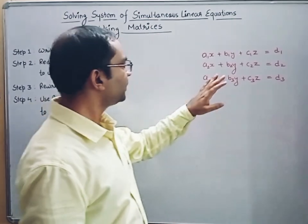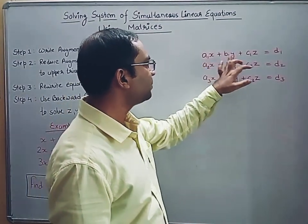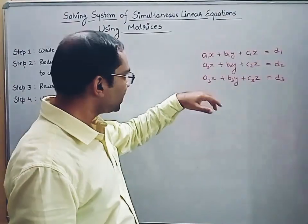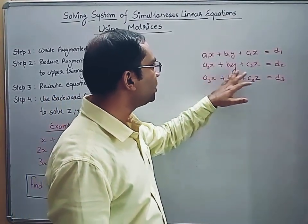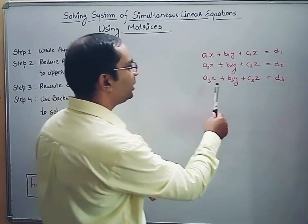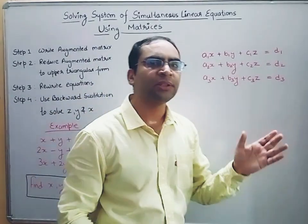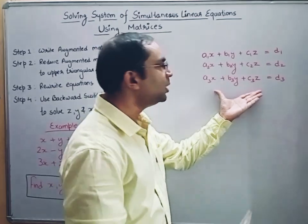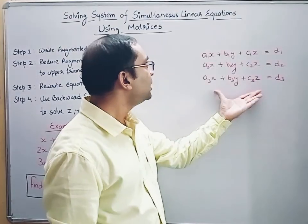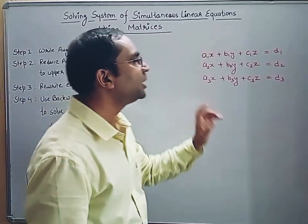Any system written in this form — a1x plus b1y plus c1z equals d1, then the second equation a2x plus b2y plus c2z equals d2, and a3x plus b3y plus c3z equals d3 — such a system formed using linear equations is known as a system of simultaneous linear equations.